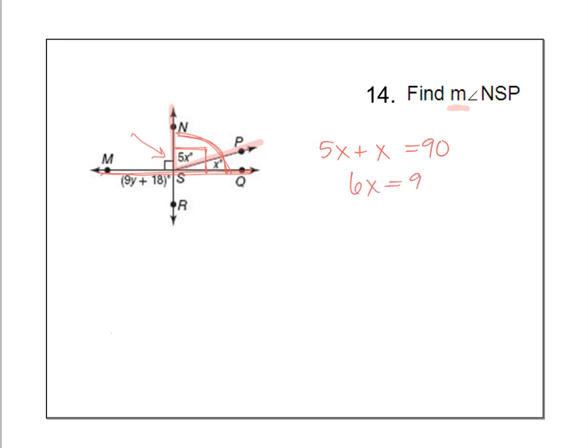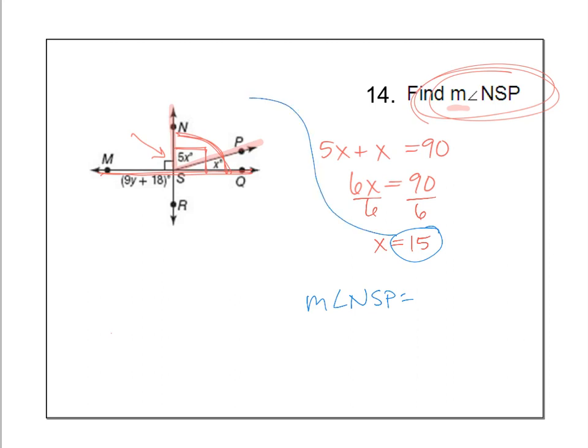So that means 6x equals 90. And if you divide by 6, we get x equals 15. But that is not our final answer. Remember, we have to find the measure of angle NSP. So the measure of angle NSP, I'm going to take that 15, and I'm going to plug it in to there, to the x next to the 5. So it's going to be 5 times 15. 5 times 15 is 75 degrees. And that would be the measure of angle NSP.